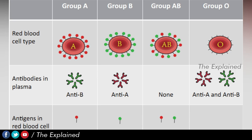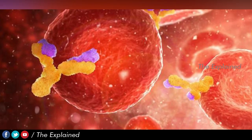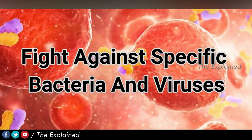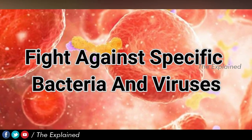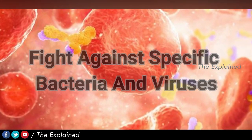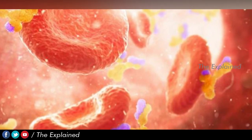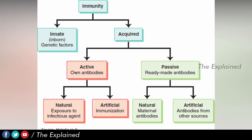The antibodies are specific to the bacteria or pathogen. We know about the immune system — the immune system has two types. One is the natural immune system, and natural immunity is present in the blood.